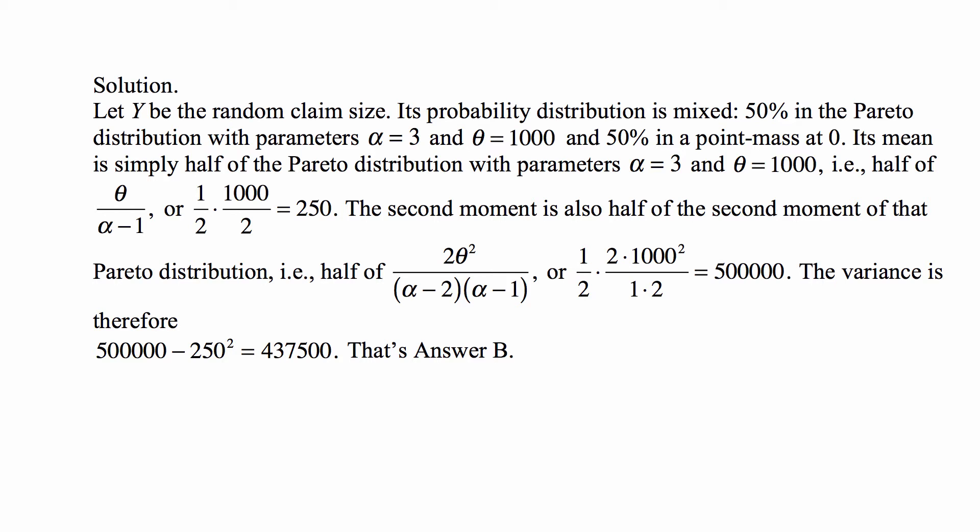It's 50% in the Pareto distribution with parameters α = 3 and θ = 1000, and 50% chance of no claim. Its mean is simply half of the Pareto distribution with parameters α = 3 and θ = 1000, because half times 0 is 0.